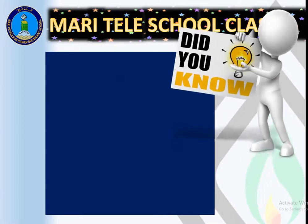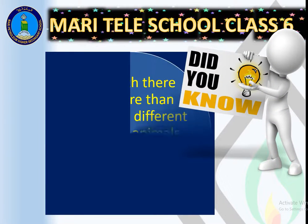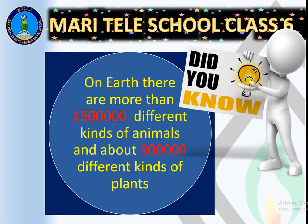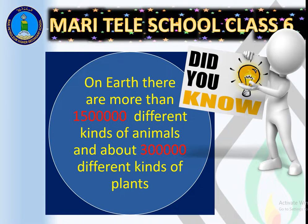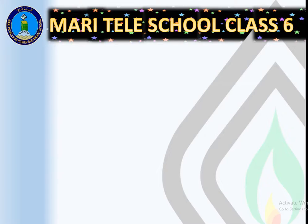Did you know? On Earth there are more than 1,500,000 different kinds of animals and about 300,000 different kinds of plants. Isn't it amazing? So let's explore the world of living things, their characteristics and life processes.